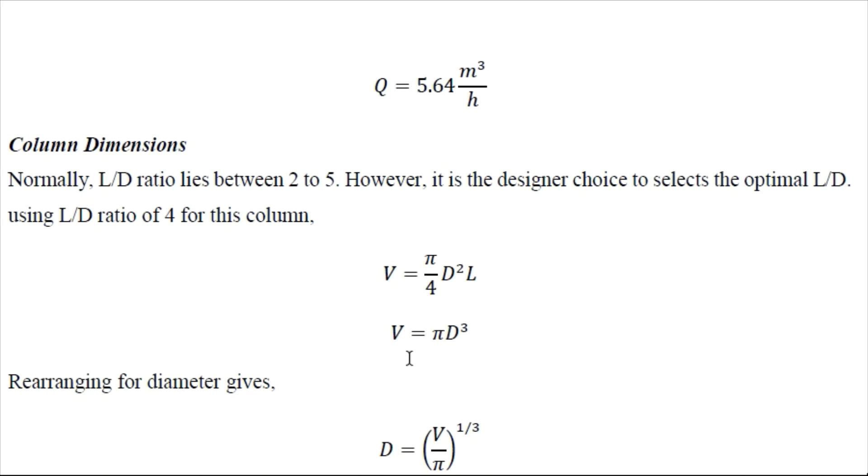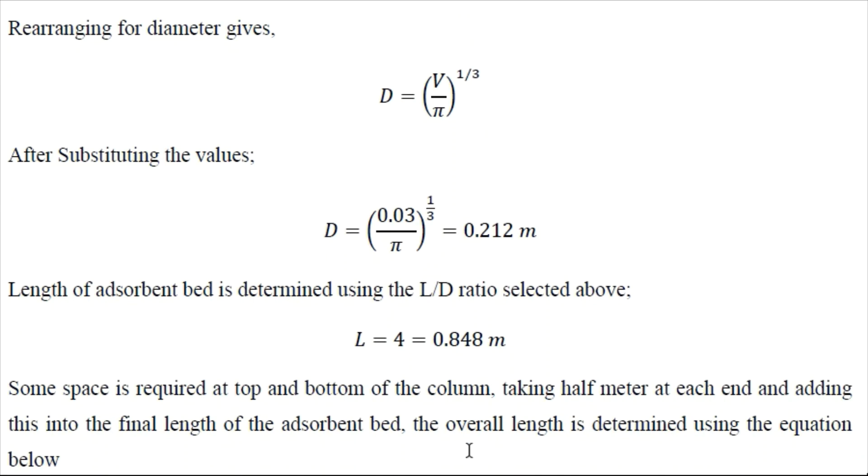So using the volume value we can determine the diameter like here. So then we can determine the length using L by D ratio as 4. So it would be 4D here. So it comes out to be 0.848 meter.